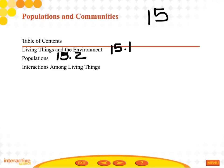The last lesson is interactions among living things, which is 15.3. In this you will be explaining how adaptations help an organism survive, describe competition and predation, and identify the three types of symbiosis.